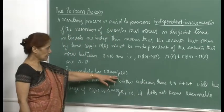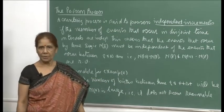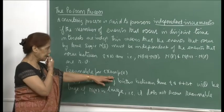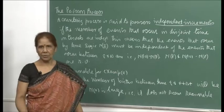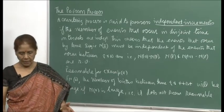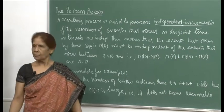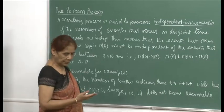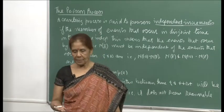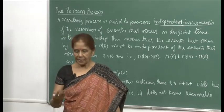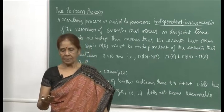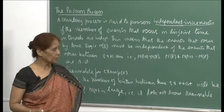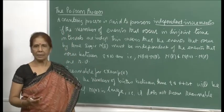I gave you three examples of counting processes. The first one was arrivals at a post office. For example A, this may be a reasonable assumption, because we may assume that as long as the post office is open, people will come in at any time. The number of arrivals from 8 a.m. to 10 a.m. and the number of arrivals between 10 and 12 — the two random variables in these disjoint intervals — are independent.